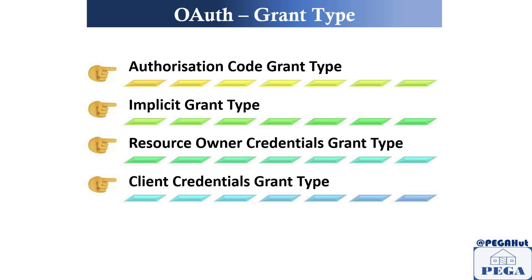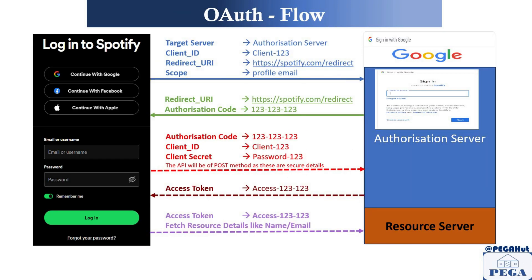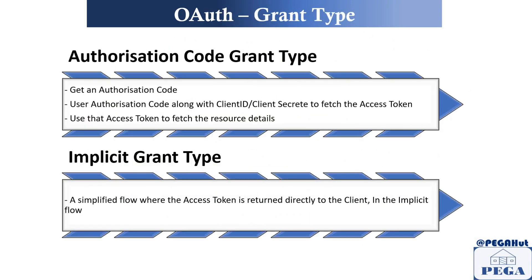The Authorization Code grant type is exactly what I just explained. You get an authorization code, then use your client ID and secret along with the authorization code to fetch the access token, and using that access token you fetch the resource details.